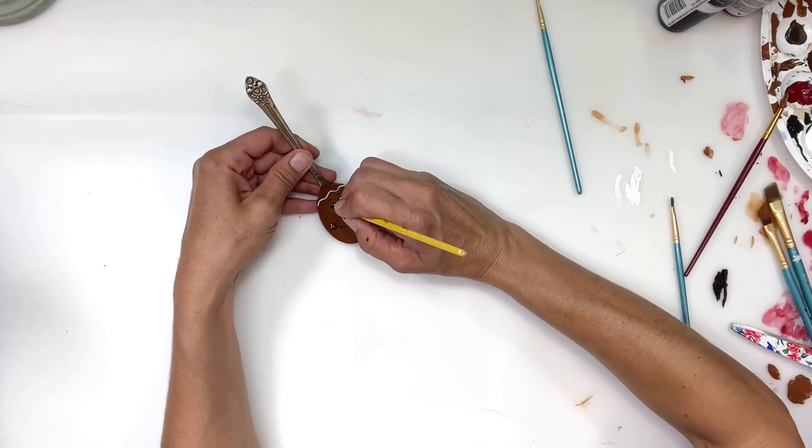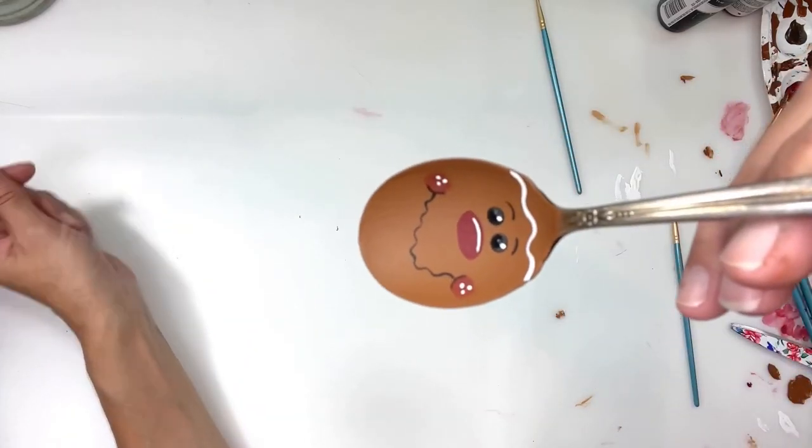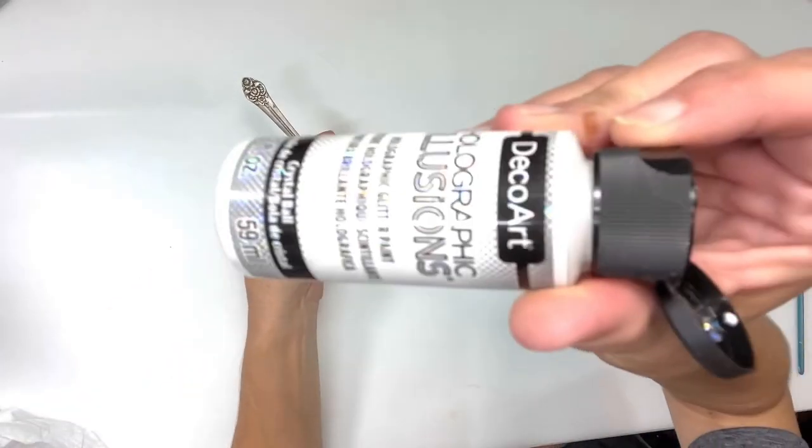Then again using the white with this very thin brush, I'm going to add two dots for his eyes. And that is it for his face.